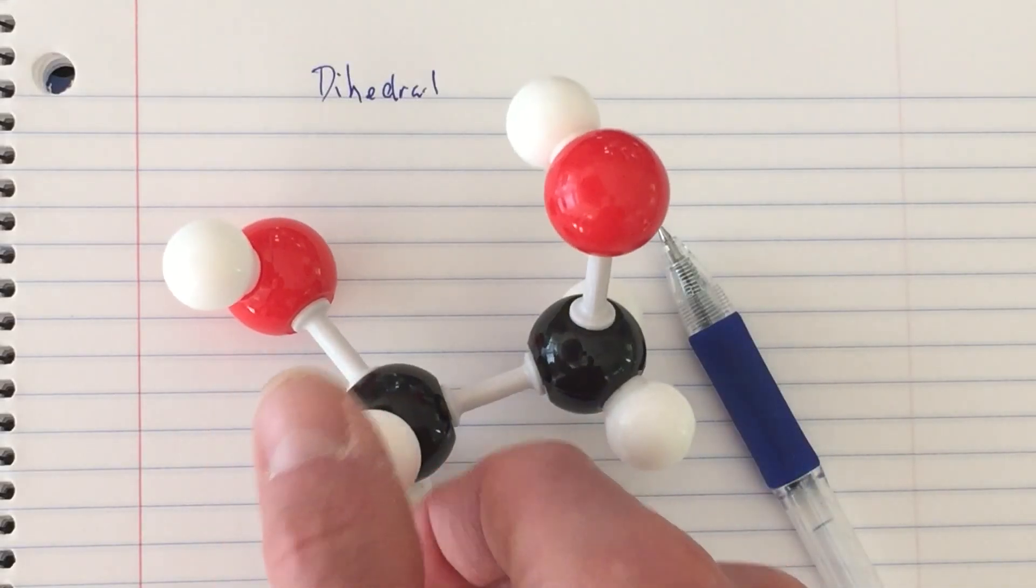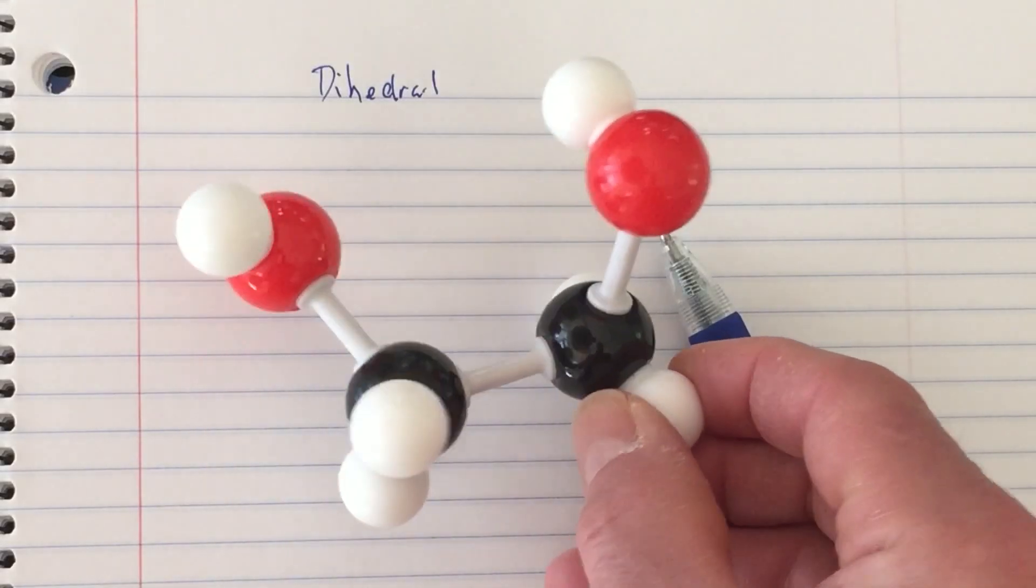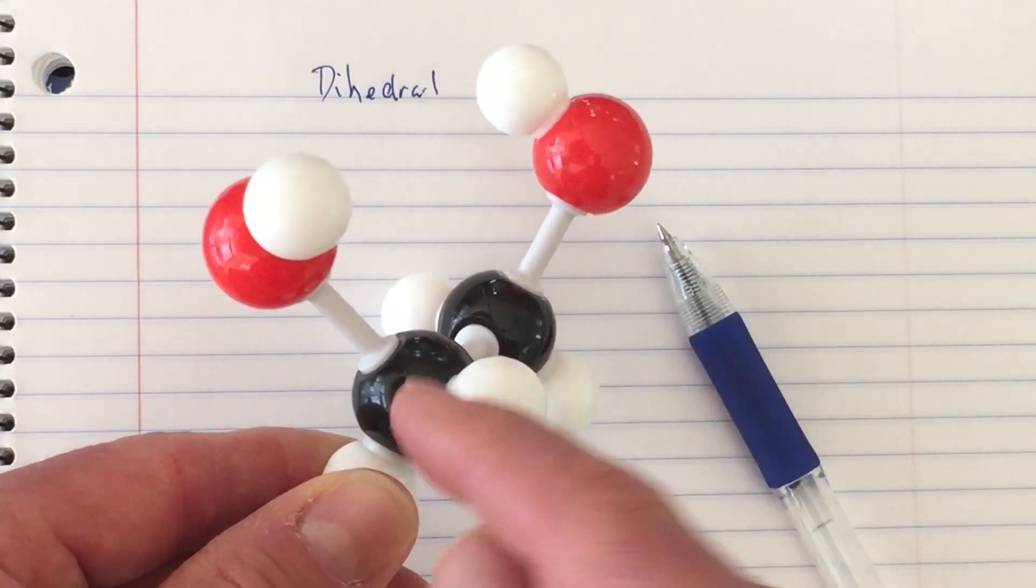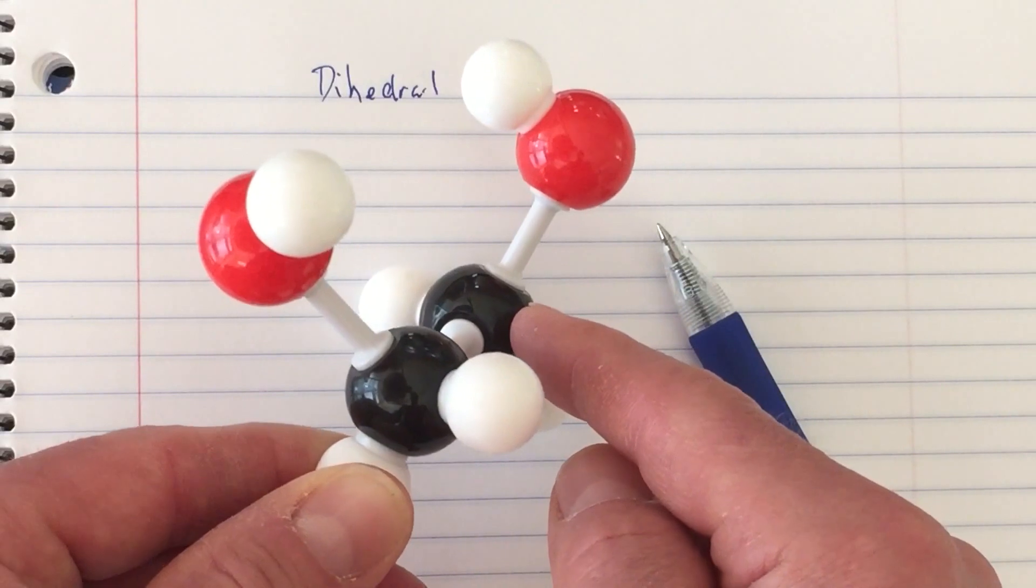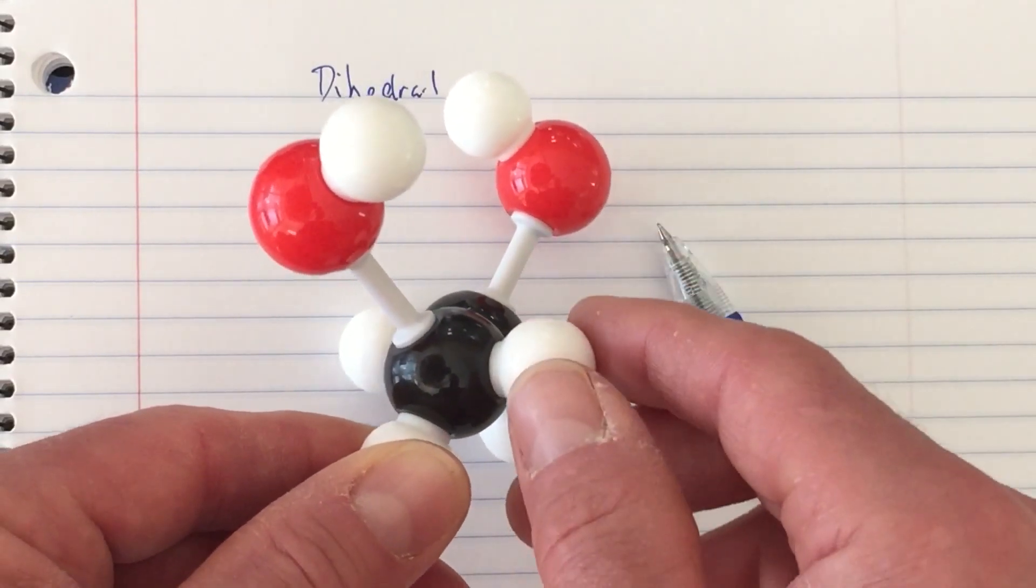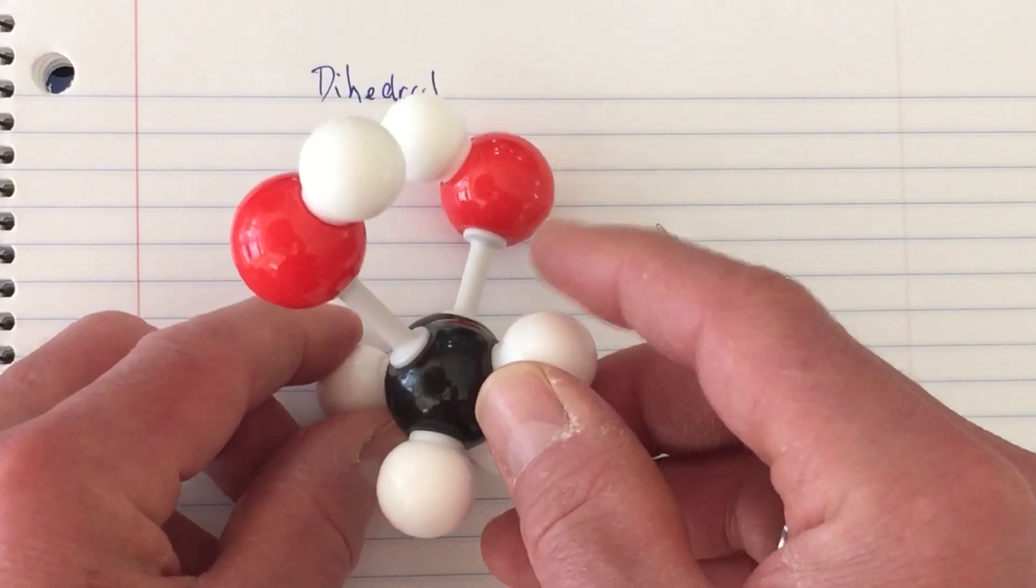We're talking about dihedral angles. I have here a model of ethylene glycol, which is two carbon atoms linked by a single bond. Each carbon is also bonded to a hydroxyl group, and we can illustrate